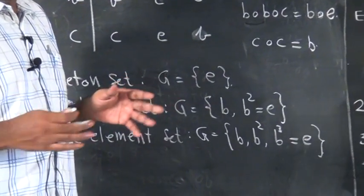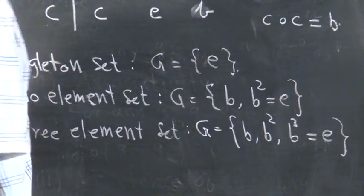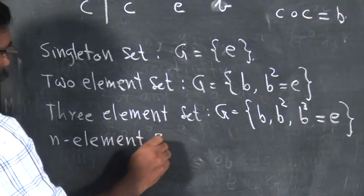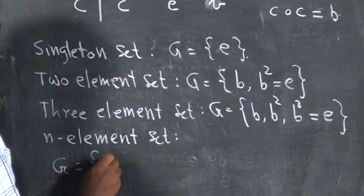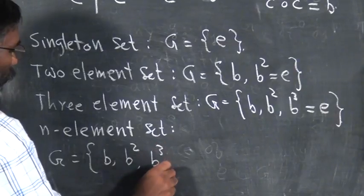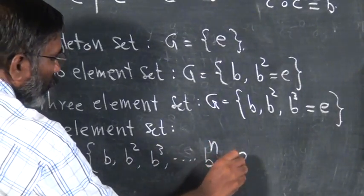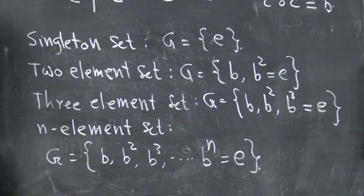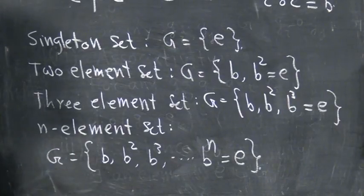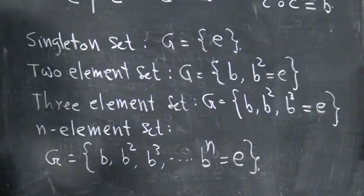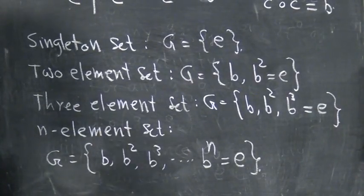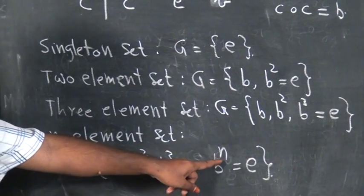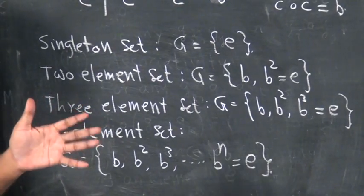In general, a group of n elements — I can always define a group like this. If I have an n-element set that can become a group, I can write B, B², B³, etc., and B^n equals E. This forms a group. There is only one element whose compositions with itself will become other elements, continuing until n compositions of the same element gives the identity. That closes the group.